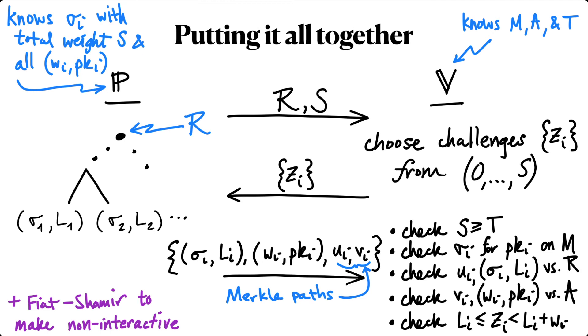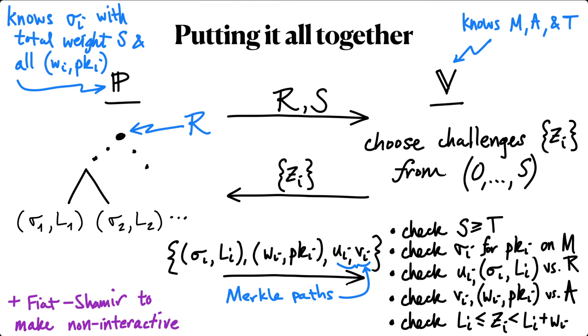Finally, since this protocol is public coin, it can be made non-interactive via the Fiat-Shamir heuristic. In the paper, we show that this protocol is a non-interactive random oracle proof of knowledge, as defined in the work of Ben-Sasson-Chiesa and Spooner from TCC 2016.